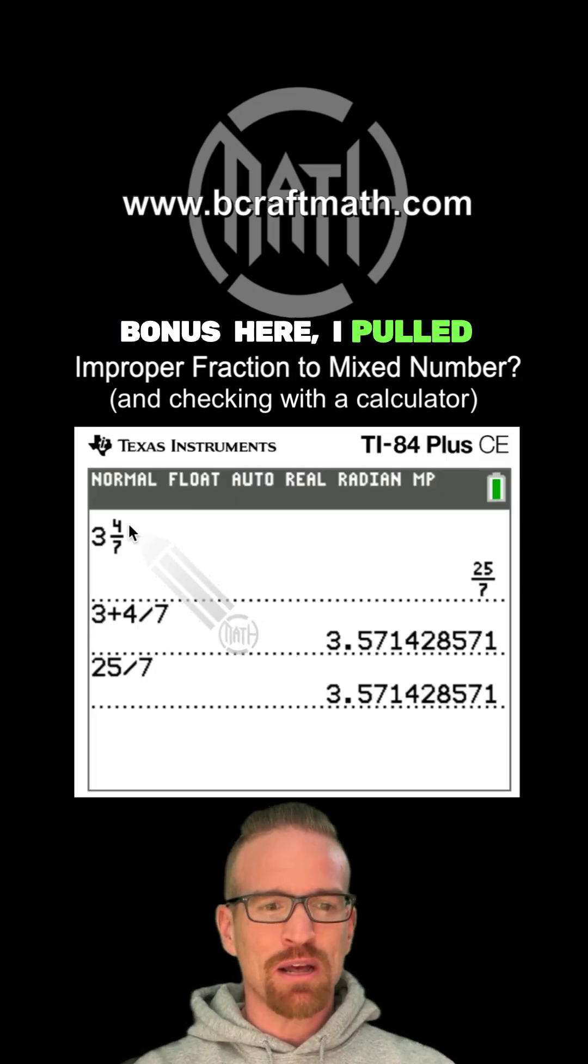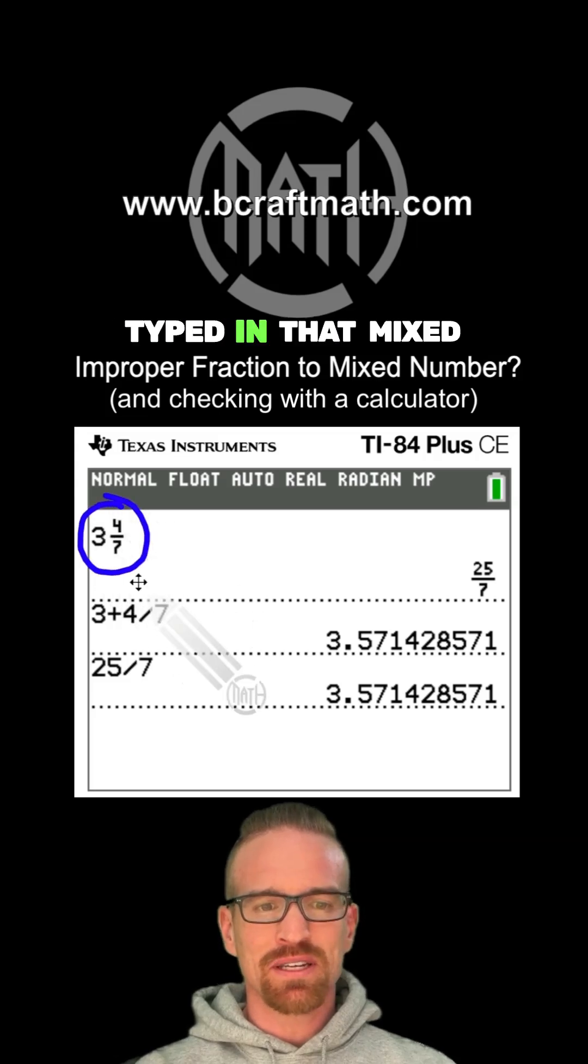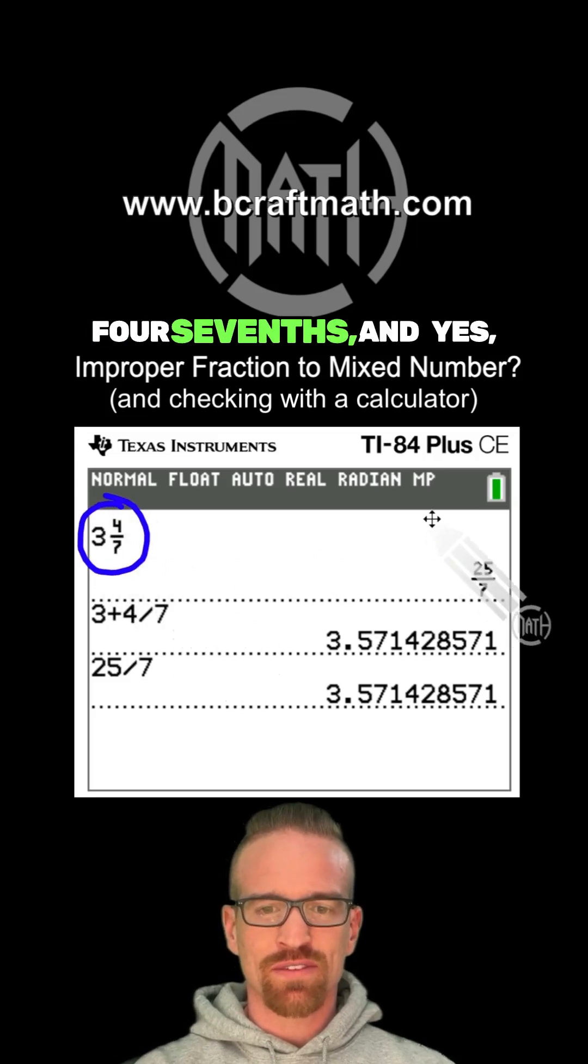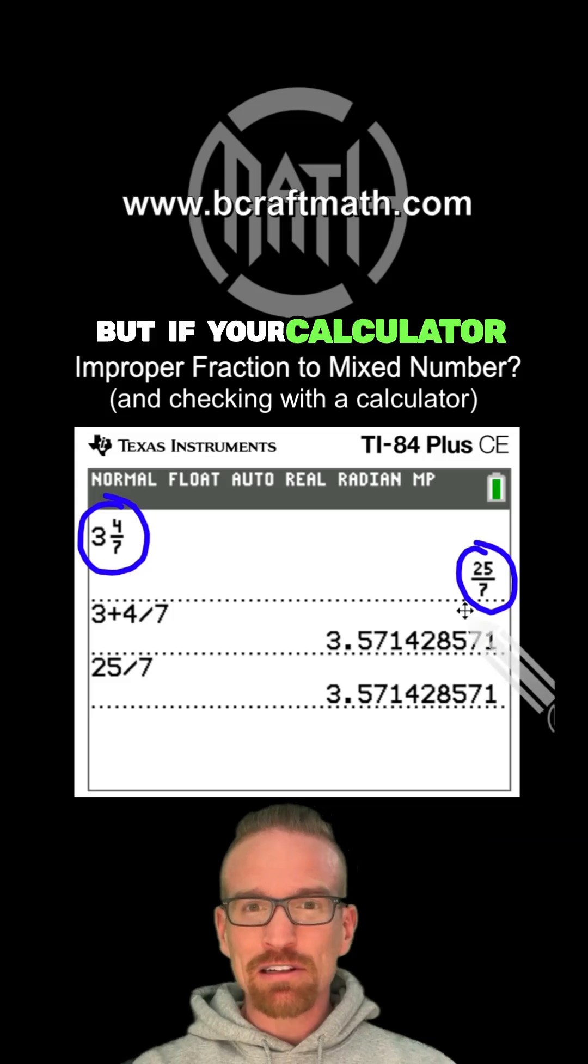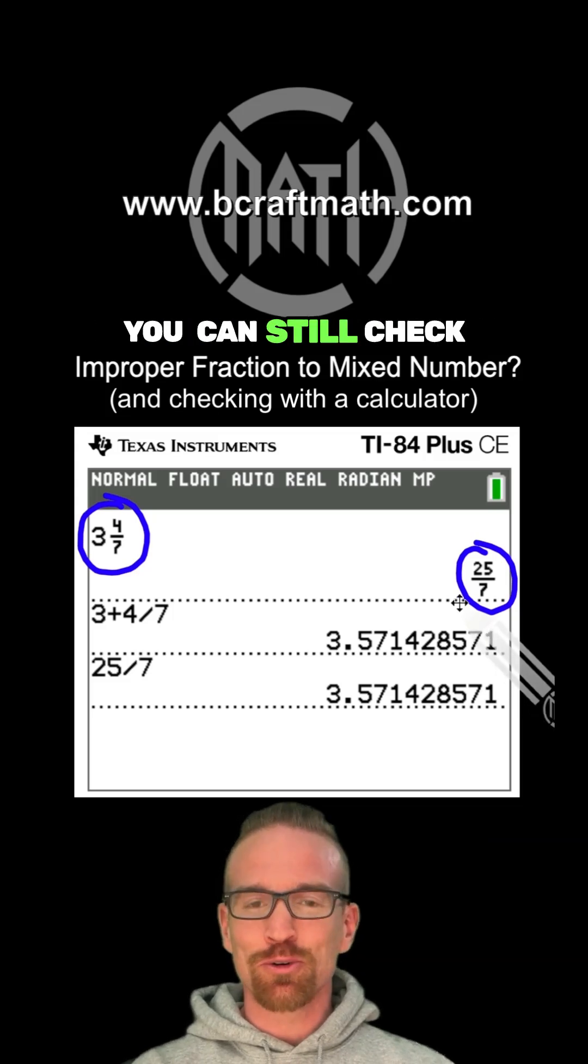And as an added bonus here, I pulled out my TI-84. I typed in that mixed number of 3 and 4 sevenths. And yes, it did automatically convert it to an improper fraction. But if your calculator does not do that, you can still check your work.